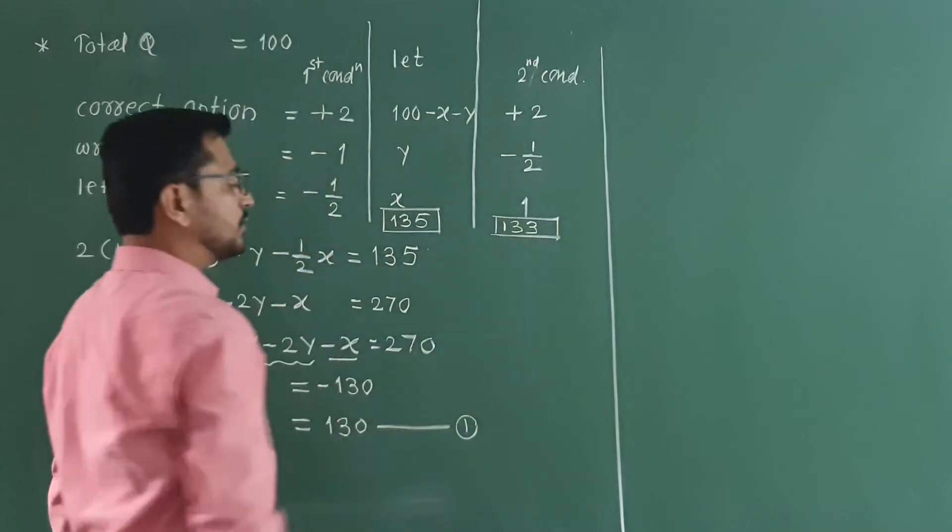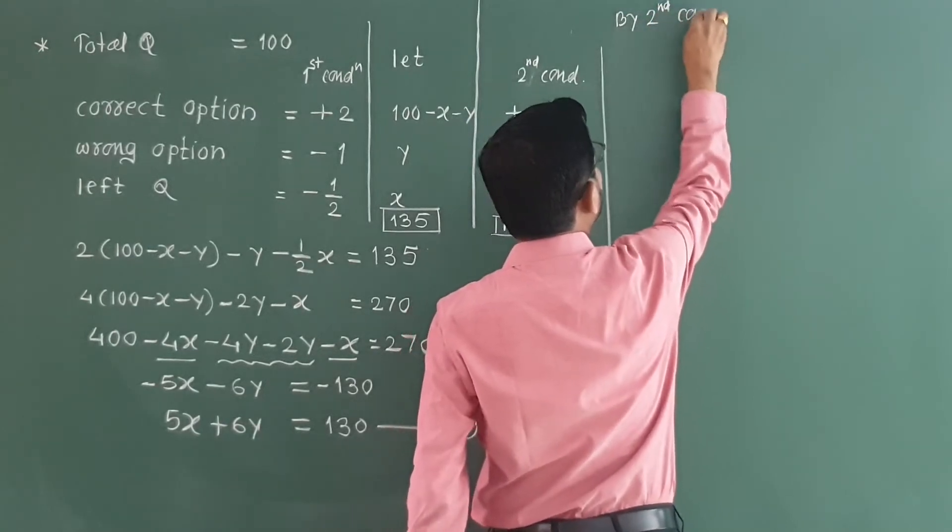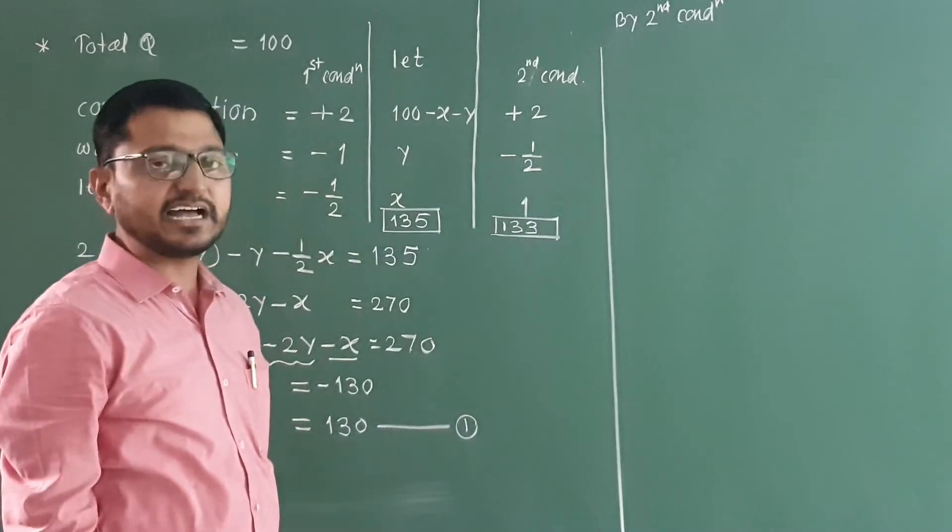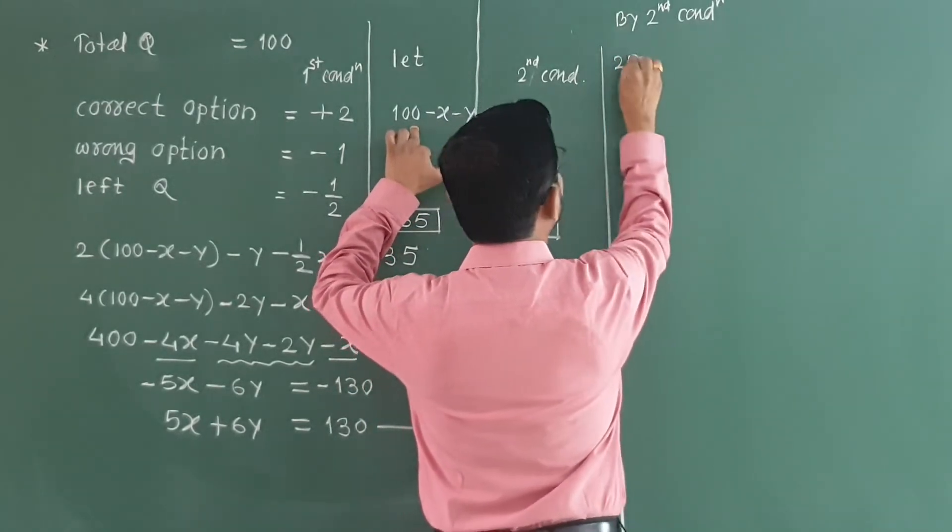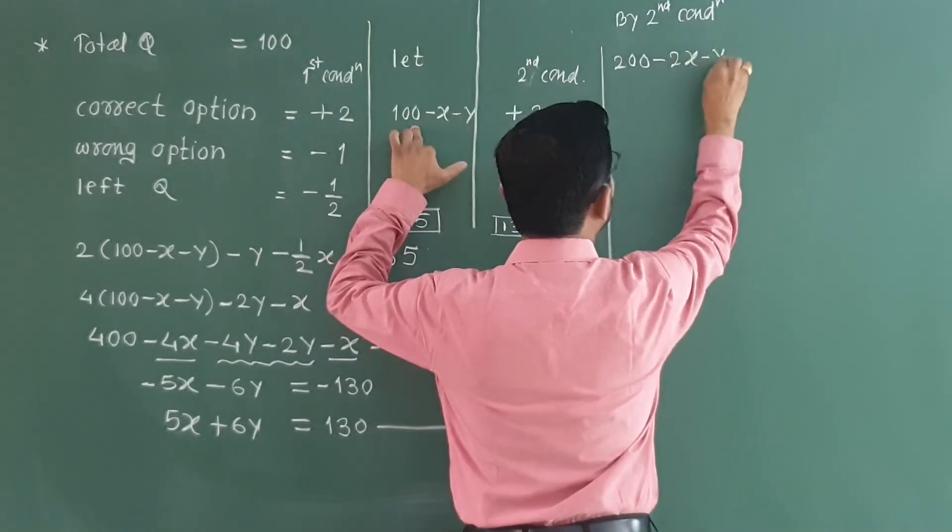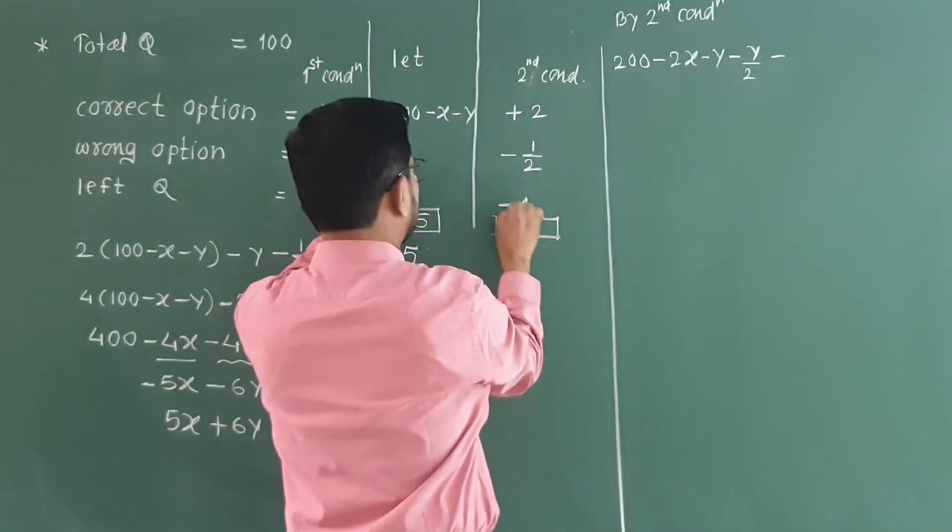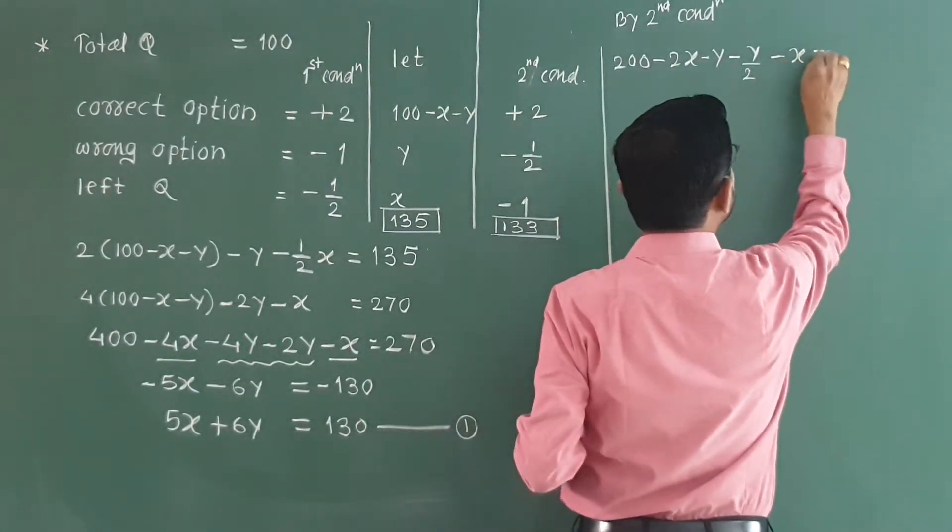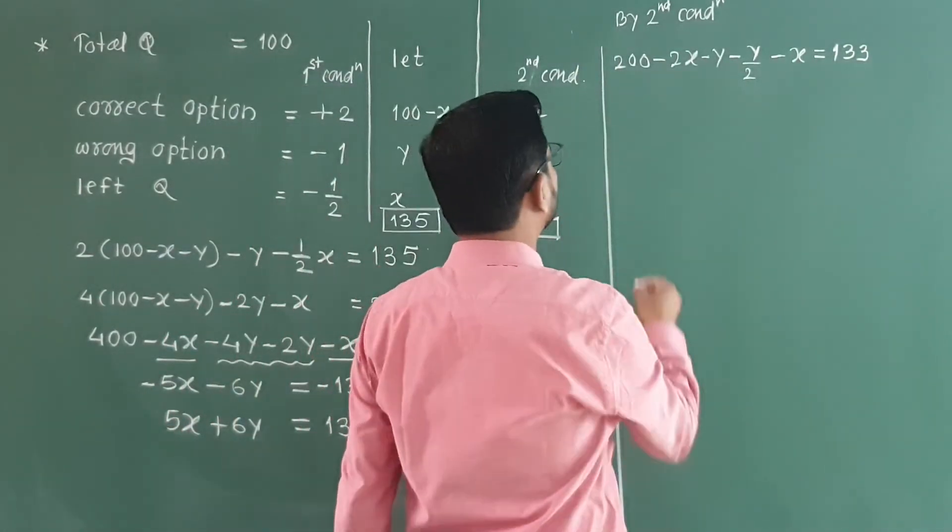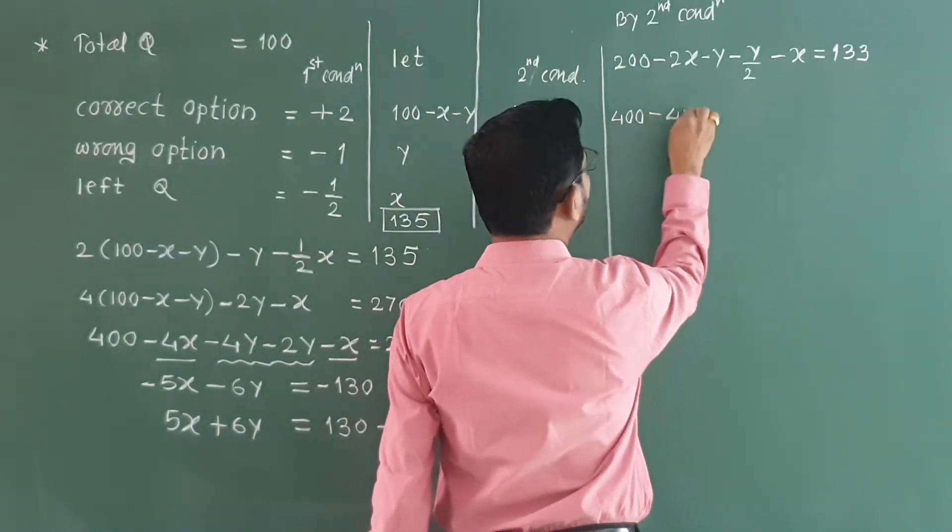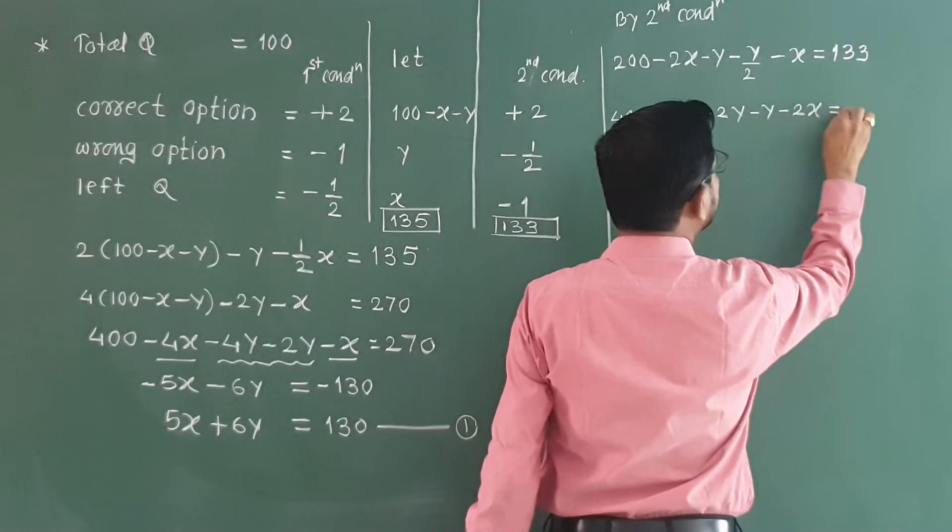By second condition, same equation. 2(100 minus x minus y) minus y by 2 minus one by x is equal to 133. Multiply by 2, we get 400 minus 4x minus 2y minus y minus 2x is equal to 266.